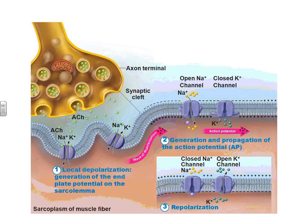Once we depolarize the membrane in one area, that will cause another sodium channel to open, more sodium floods in, and now we've changed the membrane state here — more positive on the inside, more negative on the outside. This is what we call the action potential, where this depolarization — this change in charge state across the membrane — is going to move all the way down our muscle fiber. So now we've completed step two: we released acetylcholine, it bound to the sodium channel, sodium flooded in causing depolarization, and the depolarization continues as an action potential all the way down the cell.